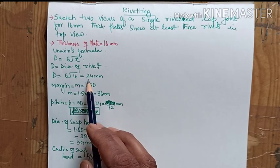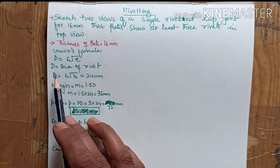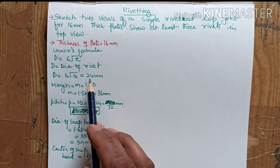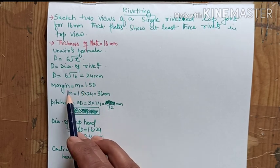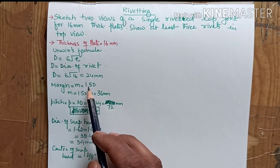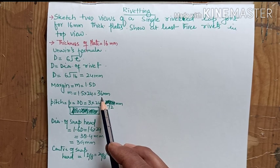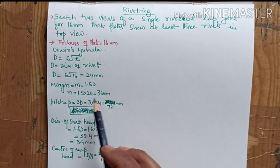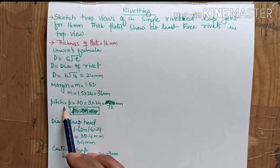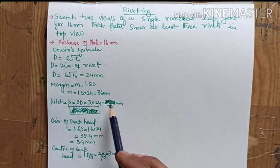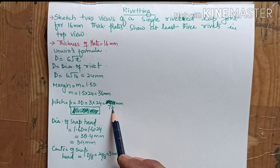So this D is the diameter of the rivet. By substituting the D we can find out the other values. Margin is 1.5D so we calculate the value 36. Pitch is 3D and we get 72.